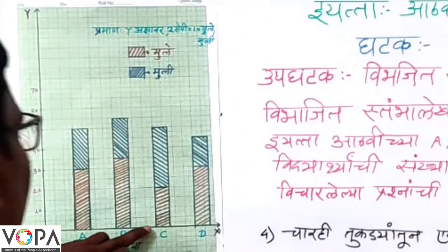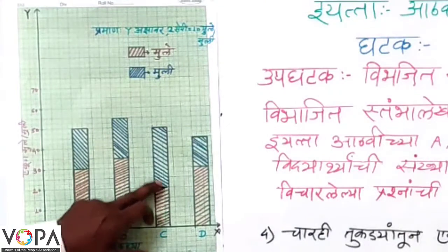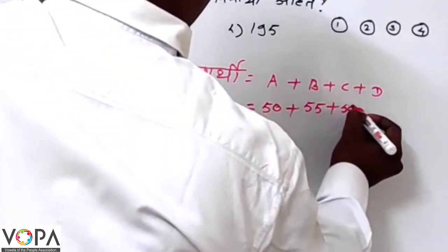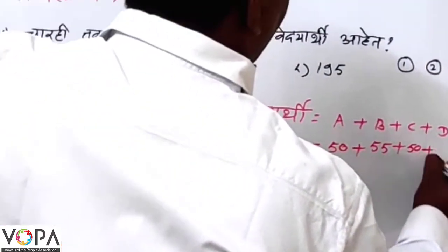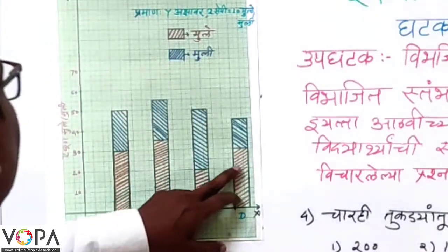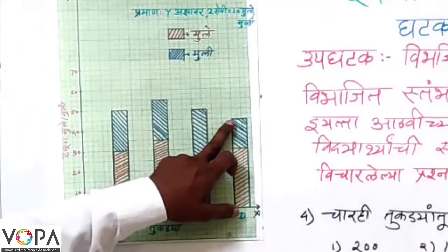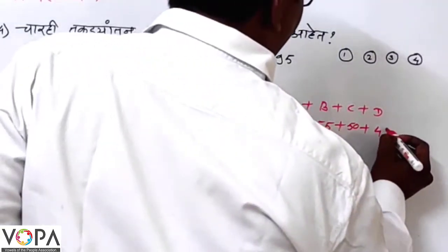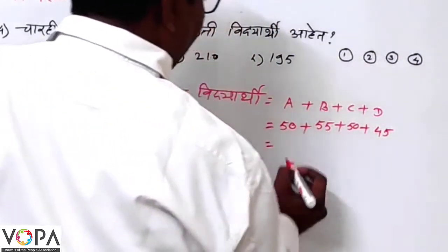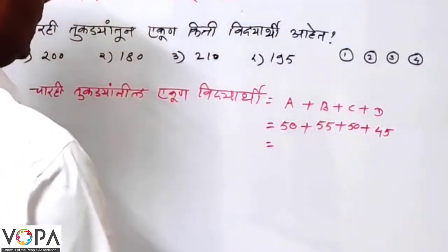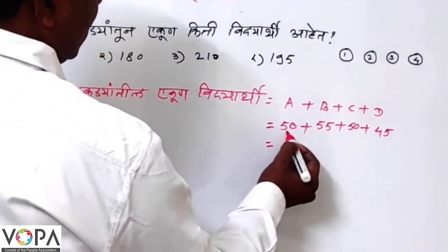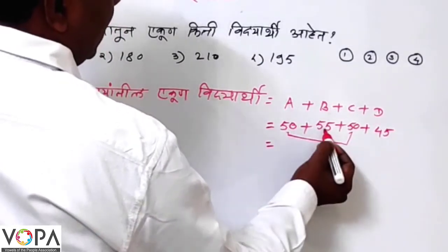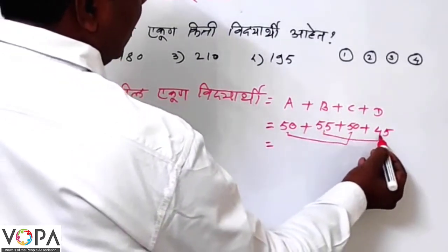C is equal to 0.5 and D is equal to 0.5. The fact that the value of C is equal to 0.5 and D is equal to 0.5.